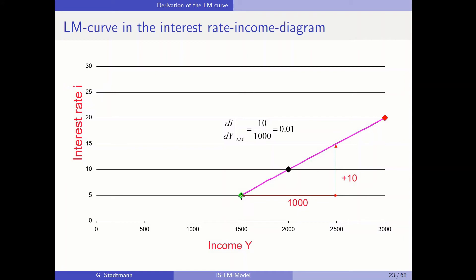When we go only one step to the right, the curve goes 0.01 steps upwards, which we would not see in the graph. Therefore we augment this relationship so that we can see and derive the slope from the graph. The next step is to confirm the slope of the LM curve by a formal analysis.